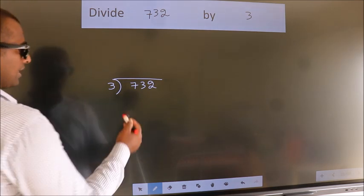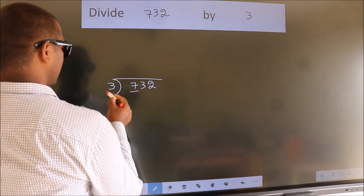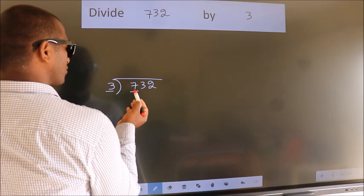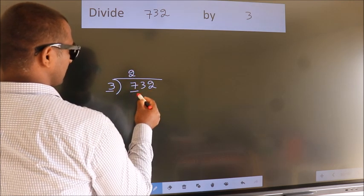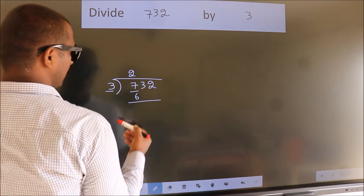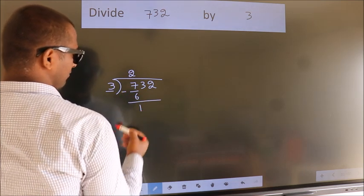Next, here we have 7. Here 3. A number close to 7 in 3 table is 3 2's 6. Now we should subtract. We get 1.